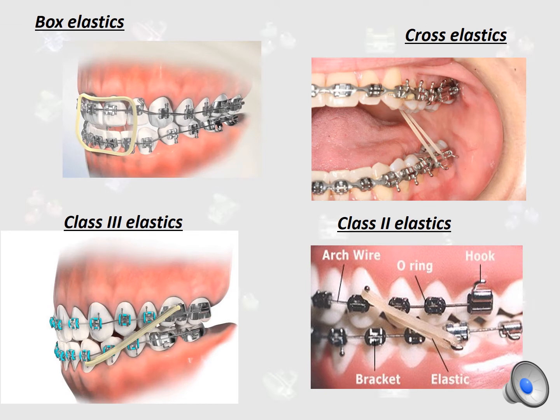Elastics can be used in many ways. Firstly, as box elastics, used in anterior open-bite cases — the box elastic will extrude the upper and lower front teeth in order to close the bite. Cross elastics are used in patients with posterior crossbite to achieve good occlusion at the back. In class 3 elastics, used in class 3 malocclusion to obtain a positive overjet — the elastic moves the lower dentition backward and the upper dentition forward. In class 2 elastics, used to move the upper dentition backward and lower dentition forward to correct the overjet.